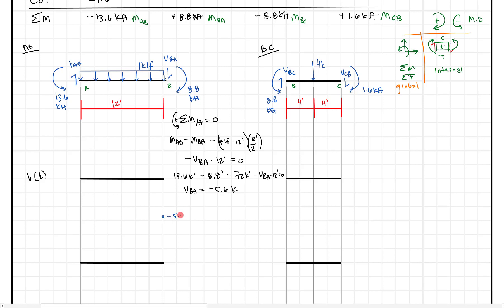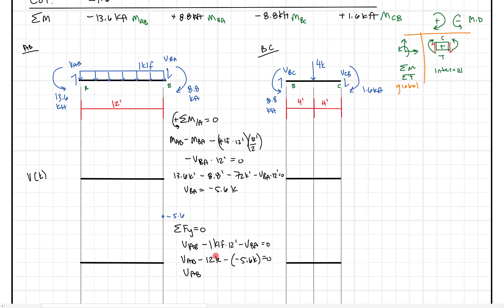Now summing forces in the Y direction equals zero for beam AB: VAB going up, minus one kip per foot times 12 feet, minus VBA going down equals zero. Plugging in, we get VAB minus 12 kips minus negative 5.6 kips equals zero. Solving, we get VAB equals 6.4 kips, which is positive. So on the left-hand side of our shear diagram, we come up to 6.4 kips. Those are the first two points in our shear diagram.